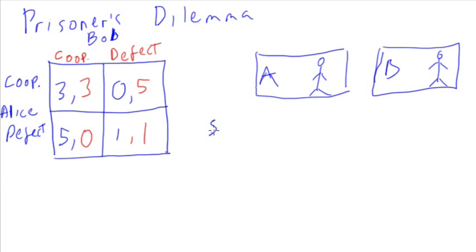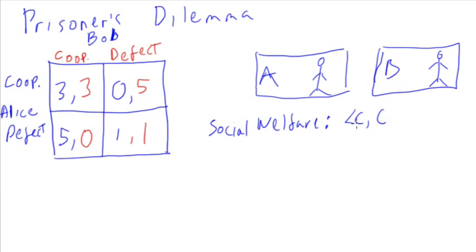Let's first find the social welfare solution. The social welfare solution is the one that maximizes the sum of everybody's utility. To do that, you go through each box and add both numbers: three plus three is six, five plus zero is five, zero plus five is five, one plus one is two. So six is the maximum, meaning cooperate-cooperate is the social welfare solution for the prisoner's dilemma. That's what you'd want — and in most cop movies, that's what you'd expect: both of them keep their mouths shut.